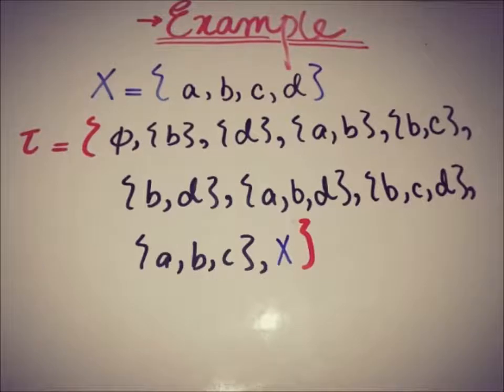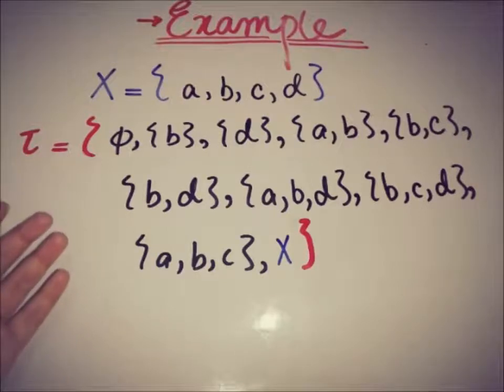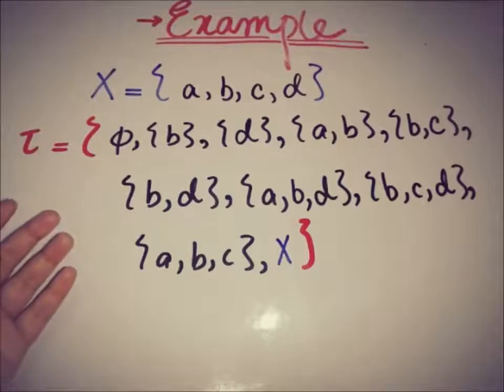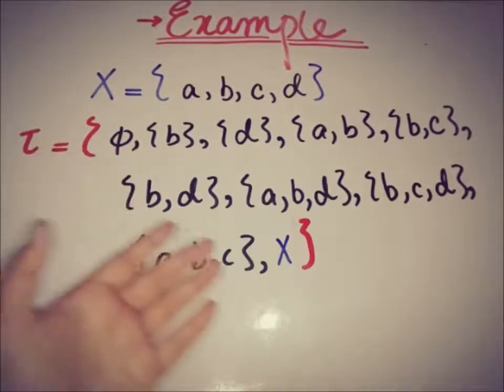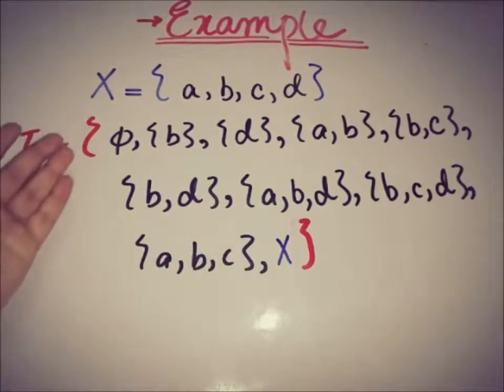So this is a topology on the space X and we can prove this by proving the three basic properties of being a topology on set X. The very first property is the existence of the empty set and the space X or the set X in the collection of the subsets of X.